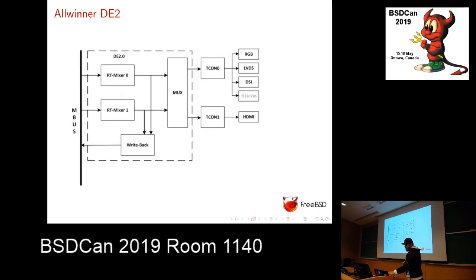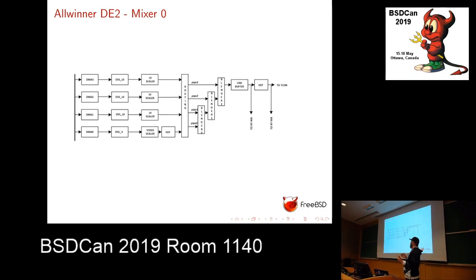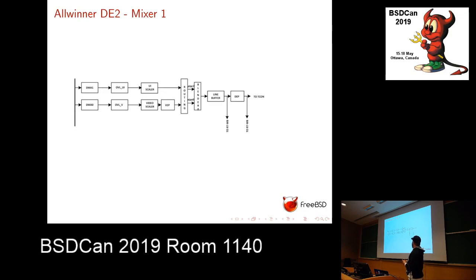The Allwinner mixer looks like this: you have two of them, mixer 0 and mixer 1. Mixer 0 can have one video plane — planes that handle YUV format, common in video — and up to three UI planes, which are generic RGB planes with some alpha value. You can configure how planes are layered, whether a plane is on top or behind another. Mixer 1 only has one video plane and one UI plane. So if you use mixer 1 for HDMI output, you have one plane representing your display and every window is rendered in that plane, but a video player could use the video plane directly.